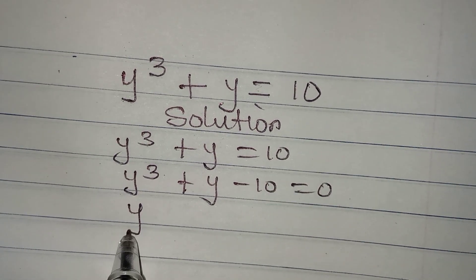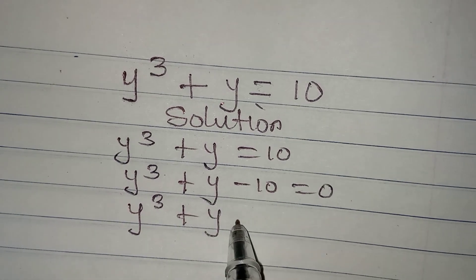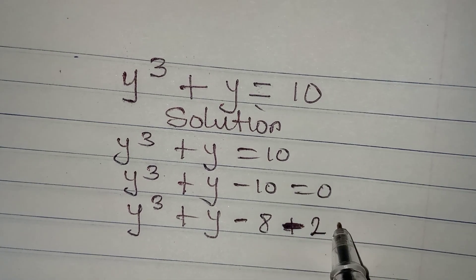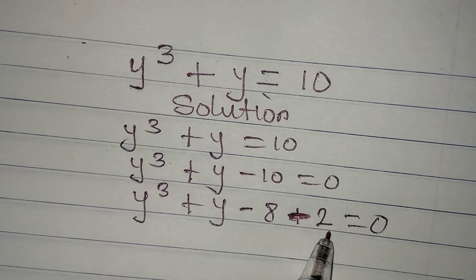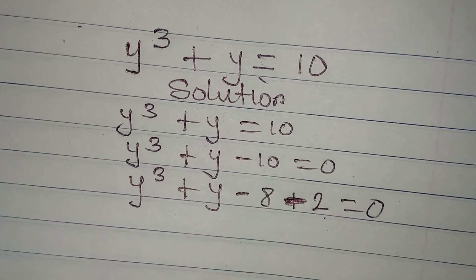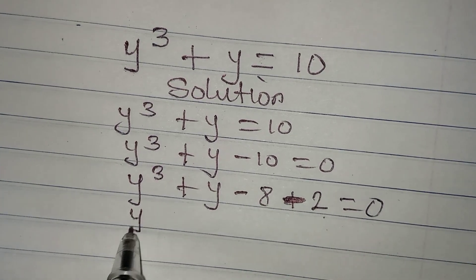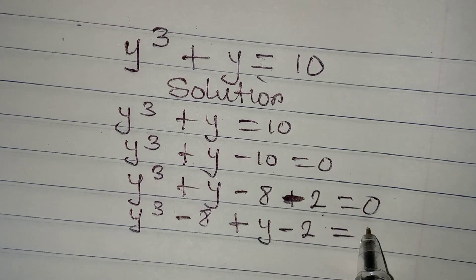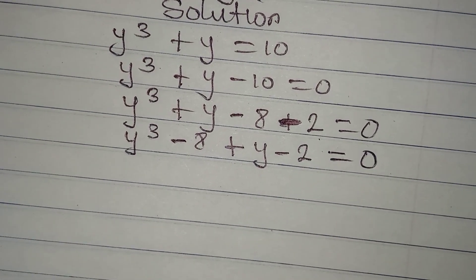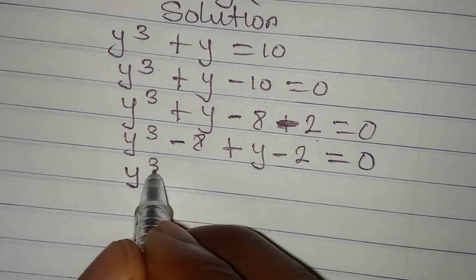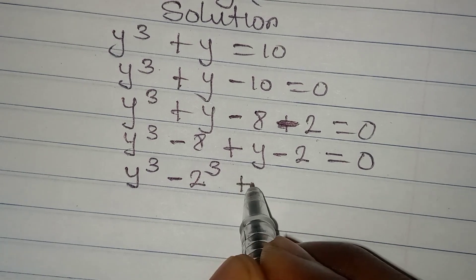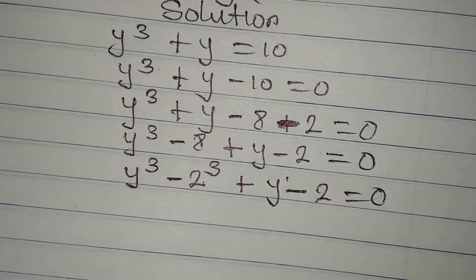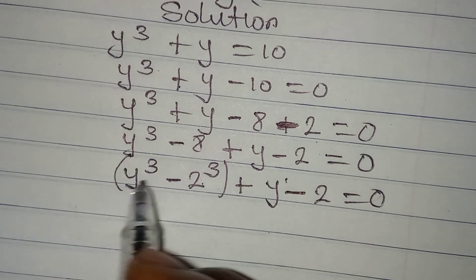Now y cubed plus y minus 8 minus 2 is equal to 0, because minus 8 minus 2 gives minus 10. Let's rearrange: y cubed minus 8 plus y minus 2 is equal to 0. We recognize y cubed minus 8 as y cubed minus 2 cubed, and we group these two pairs.